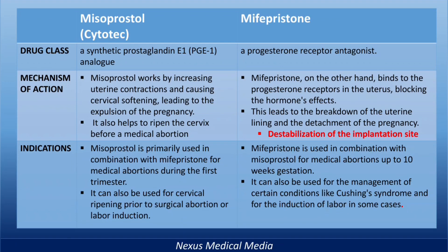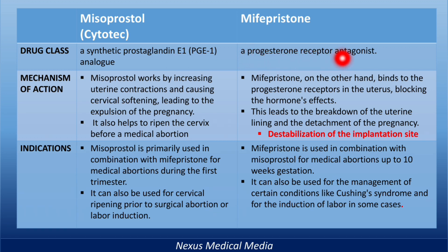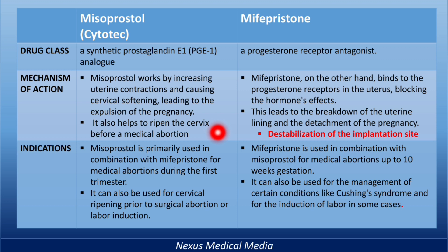Now let's compare these drugs. Misoprostol, also known as Cytotec, is a synthetic prostaglandin E1 analog, while mifepristone is a progesterone receptor antagonist. In terms of mechanism of action, Cytotec works by increasing uterine contractions and causing cervical softening, leading to the expulsion of the pregnancy. It also helps to ripen the cervix before medical abortion.